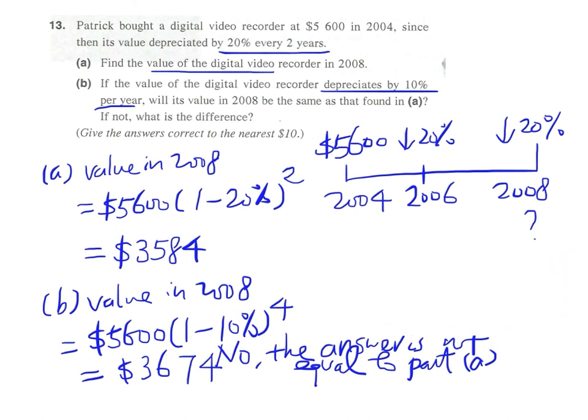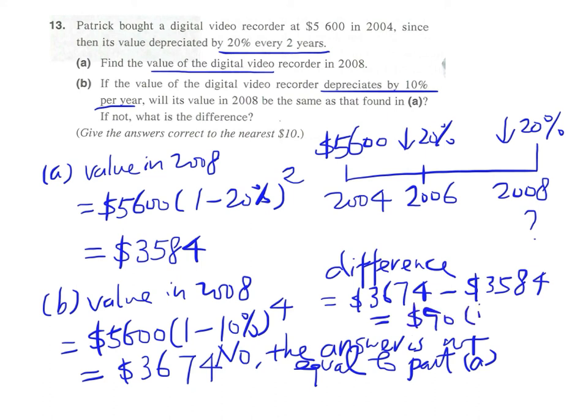Therefore, the difference will be $3,674 minus $3,584, which is $90. Thank you.